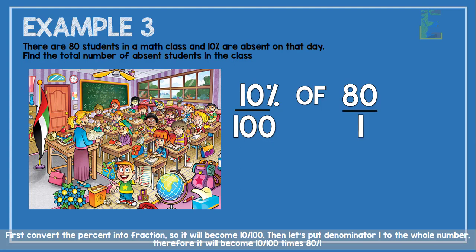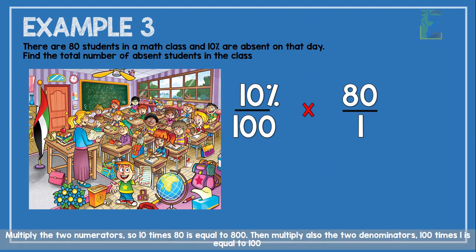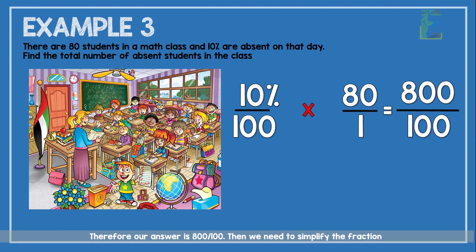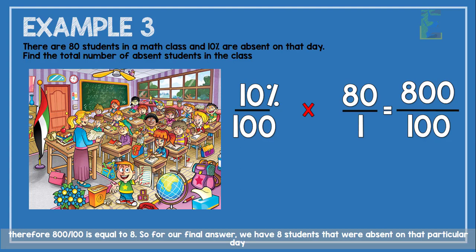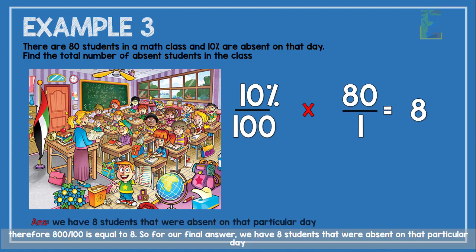Then put denominator 1 under the whole number. So it becomes 10 over 100 times 80 over 1. Now multiply the two numerators: 10 times 80 equals 800. Then multiply the two denominators: 100 times 1 equals 100. Therefore, our answer is 800 over 100. Simplifying the fraction, 800 over 100 equals 8. So our final answer is 8 students were absent on that particular day.